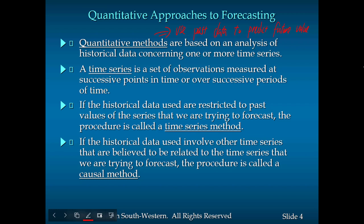Let's discuss the quantitative method. A typical time-series is a set of observations measured at successive points in time over a certain period. If the historical data used are restricted to past values of the series we are trying to forecast, the procedure is called the time-series method. If the historical data involve other time-series believed to be related to the series we are forecasting, the procedure is called the causal method.